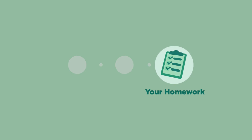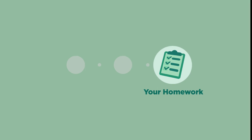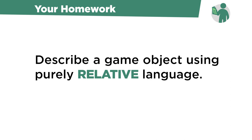For your homework, pick an object from one of your favorite games — something you know in and out — and describe that object in detail using only relative language. I think by taking your time with this, you're going to start to see visual choices in an entirely different light. Take your time, have fun, and when you're finished, I'll see you in the next challenge.